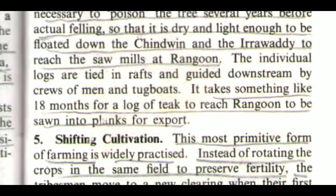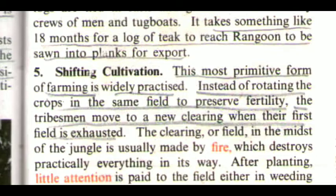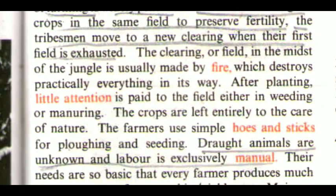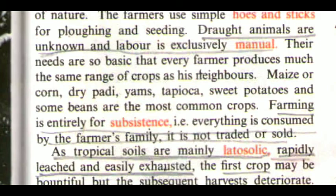Shifting Cultivation. This most primitive form of farming is widely practiced. Instead of rotating the crops in the same field to preserve fertility, the tribes may move to a new clearing when their first field is exhausted. The clearing is usually made by fire, which destroys practically everything in its way. After planting, little attention is paid to the field — either in weeding or manuring. The crops are left entirely to the care of nature. The farmers use simple hoes and sticks for ploughing and seeding. Draft animals are unknown and labour is exclusively manual. Their needs are so basic that every farmer produces much the same range of crops as his neighbours: maize, dry paddy, yams, tapioca, sweet potatoes, and some beans. Farming is entirely for subsistence — everything is consumed by the farmer's family; it is not traded or sold.